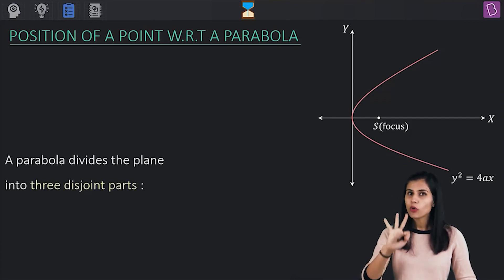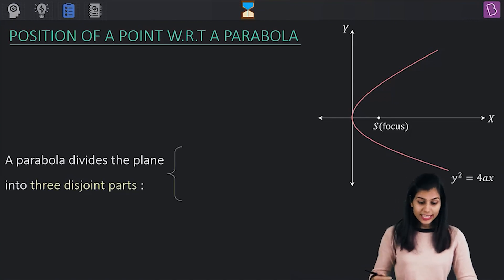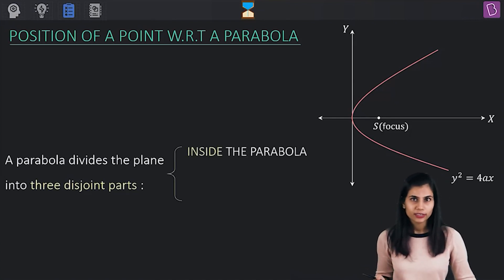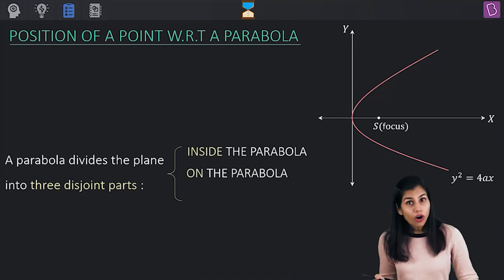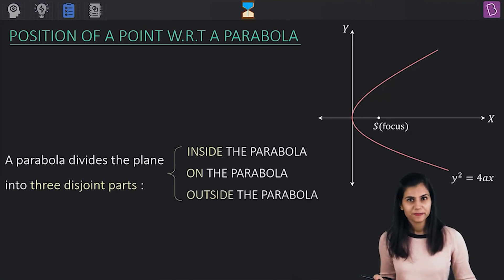What are those three regions? The region sitting inside the parabola, on the parabola, and outside the parabola.